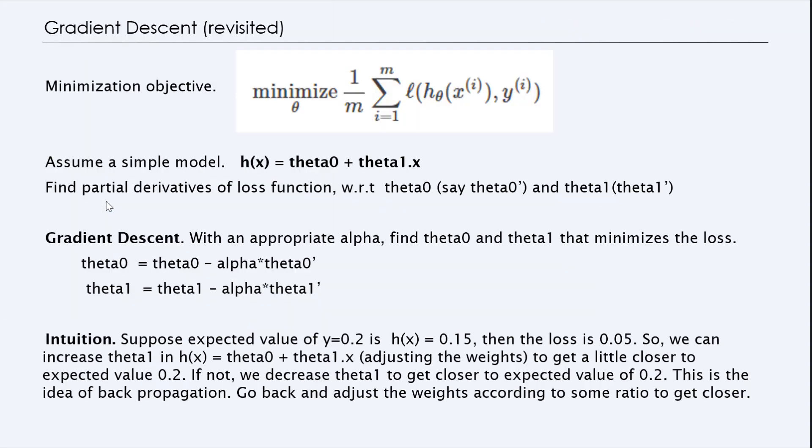So the basic idea of stochastic gradient descent will reveal what gradient descent is. Our minimization objective in machine learning problem is to take the loss function, or the average loss, over m samples and minimize it. If you assume a simple model like h(x) equals theta_0 plus theta_1 x, we find the partial derivatives of the loss function with respect to theta_0, let's say theta_0 prime, and theta_1 partial derivative, that's theta_1 prime. So the gradient descent we find by saying theta_0 is going to be the previous theta_0 minus alpha times theta_0 prime. This is our gradient descent formula that we work with.